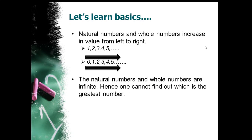Natural numbers and whole numbers are infinite — that means there is no end to them. There are an infinite number of numbers, and we cannot know which is the last one. We don't know which is the greatest number; one cannot find out. We can only say which is the smallest one.